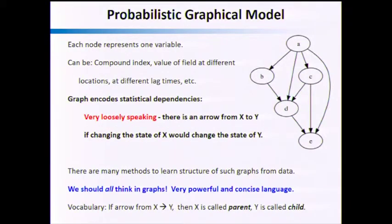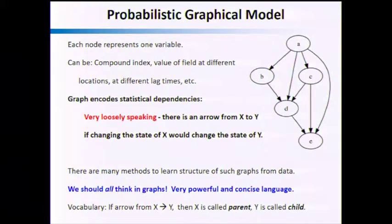One important term when dealing with causality is directed acyclic graphs, which are part of a probabilistic graphical model. Looking at a sample graph on the right-hand side with five variables — a, b, c, d, e — the variables can be anything in climate science: compound indices, values of a field at a specific location. If you want a temporal model, variables can represent different lag times. The graph encodes statistical dependencies.